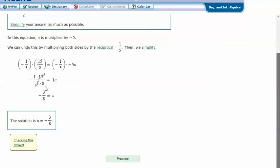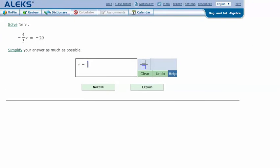Which gives us negative 3/8 for u. Let's try another one: negative 4/3 v equals negative 20. Solve for v.